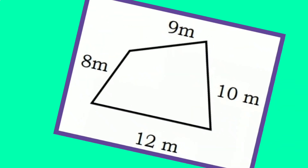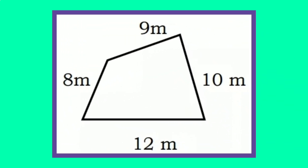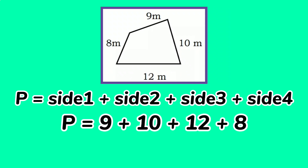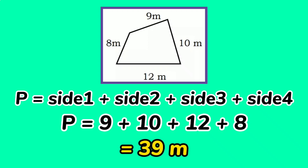How about this trapezoid? We will just add these sides to get the perimeter. So 9 plus 10 plus 12 plus 8 equals 39 meters.